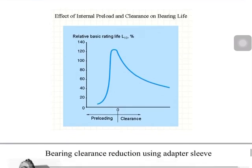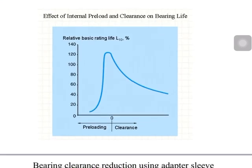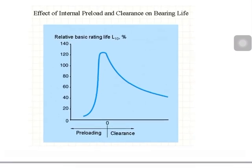Internal pre-load and clearance both significantly affect the bearing's rating life. If you have higher clearance, bearing life decreases. Equally, if you have excessive pre-load — more negative clearance — bearing life also decreases. Therefore you need an optimum very light pre-load, or during operation a near-zero clearance, to achieve the highest bearing life.